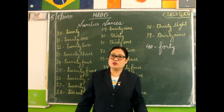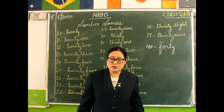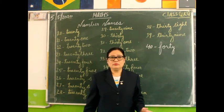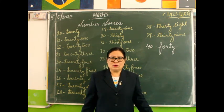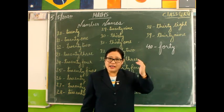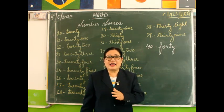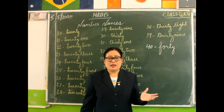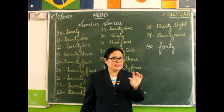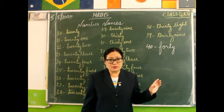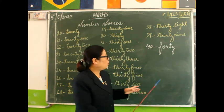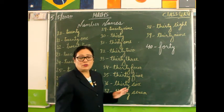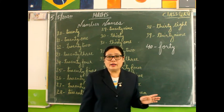So children, these are the number names. Number names, N-U-M-B-E-R, number, N-A-M-E-S, names. These are the number names from 20 to 40. From today I have written only 20 to 40 because in the last class we have learnt from 0 to 20. We have learnt already in the last class. So from today, again 20 to 40, you will write in your copy and you will learn also. Not only this, whatever you have learnt from the beginning, like you have learnt the counting numbers from 0 to 50. That is called counting numbers. That also you learn every day.